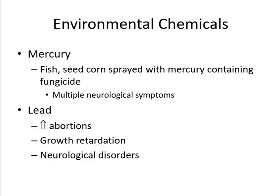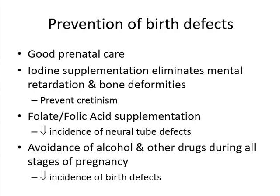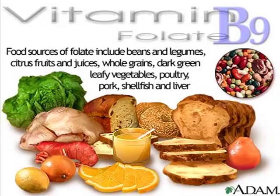Regarding prevention of birth defects from environmental factors: good prenatal care is essential. Iodine supplementation eliminates mental retardation and bone deformities, preventing cretinism. Folate or folic acid reduces neural tube defects. Avoid alcohol, drugs, and other teratogens at all stages of pregnancy. Healthy nutrition also plays a role in reducing and preventing birth defects.